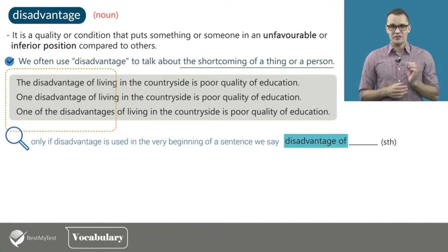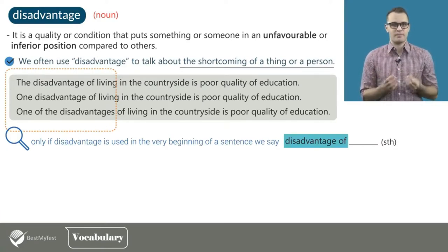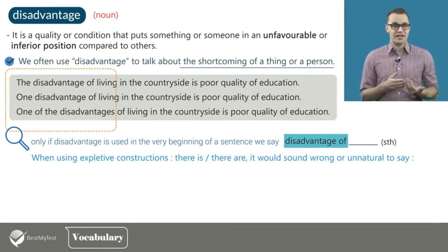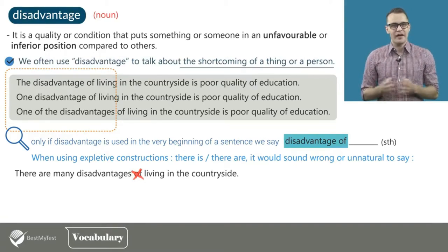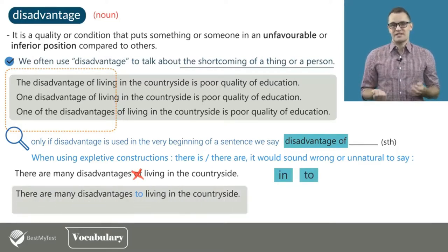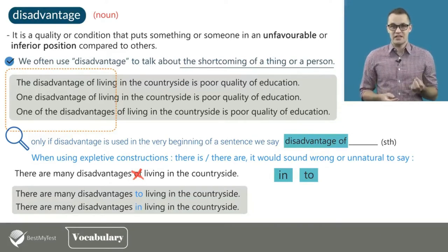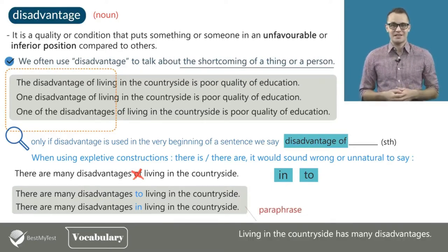However, only if disadvantage is used at the very beginning of a sentence do we say disadvantage of something. When using expletive constructions like there is or there are, it would sound wrong or unnatural to say there are many disadvantages of living in the countryside. Many students make this mistake. Here you should use the prepositions IN or TO: there are many disadvantages TO living in the countryside, or there are many disadvantages IN living in the countryside. To make it easier, we often paraphrase and simply say living in the countryside HAS many disadvantages.